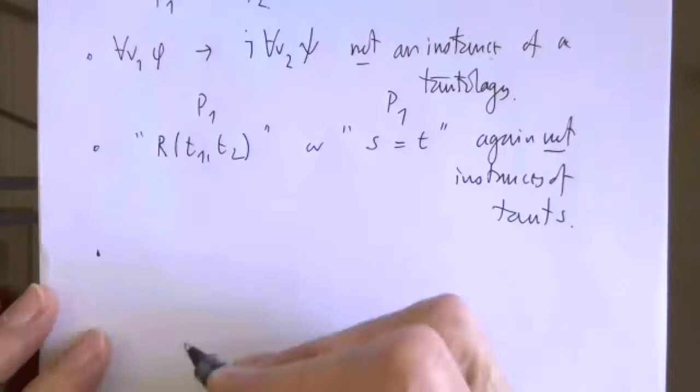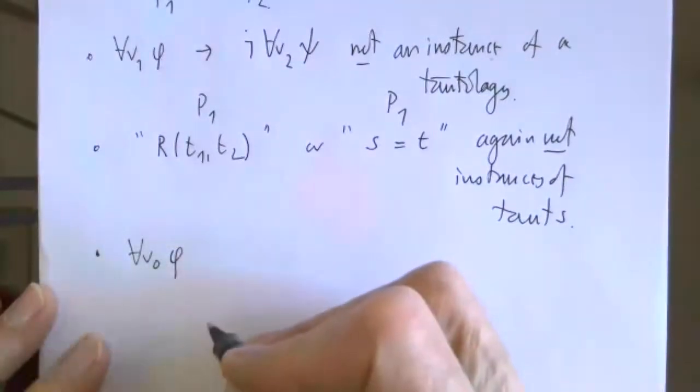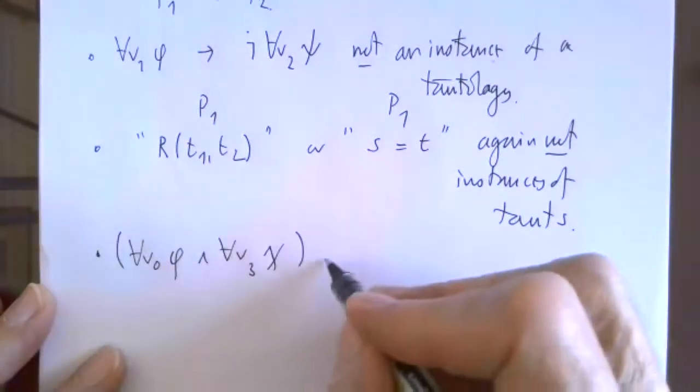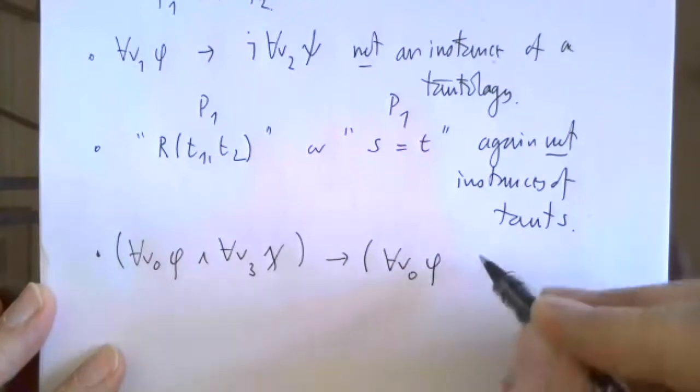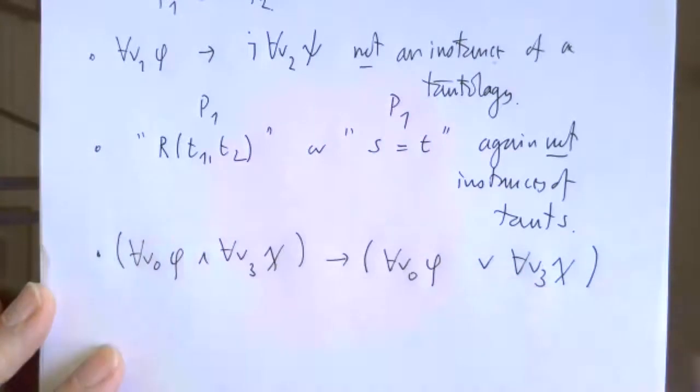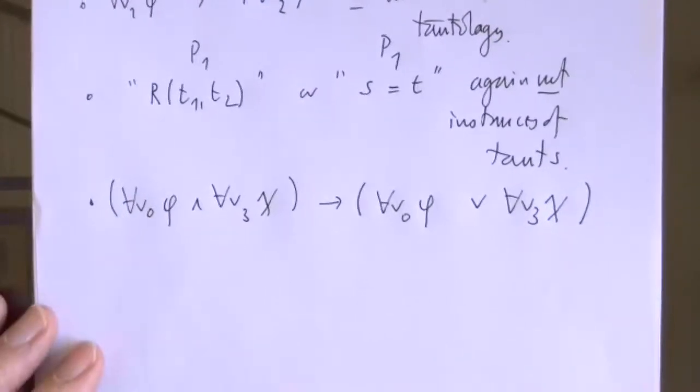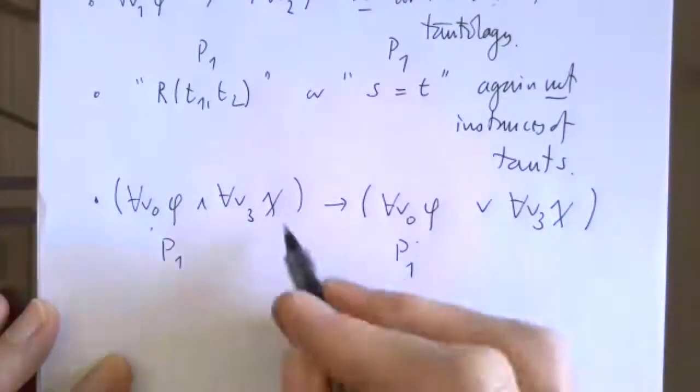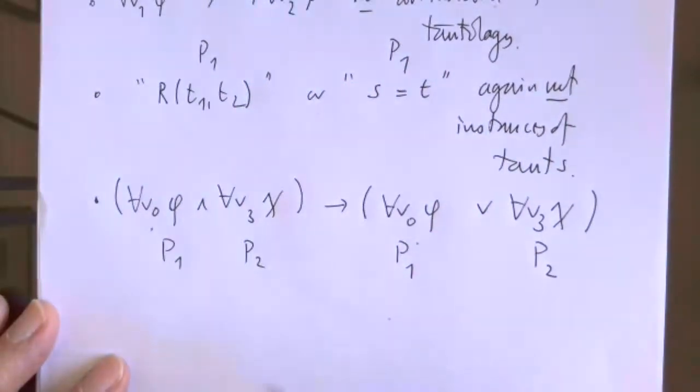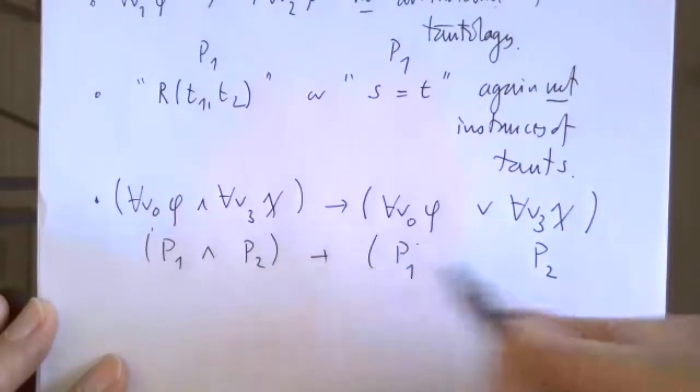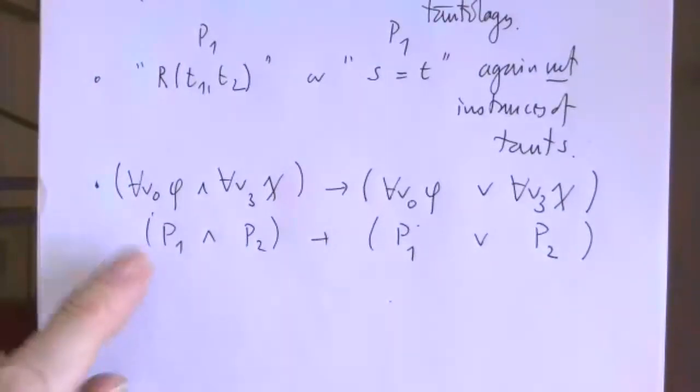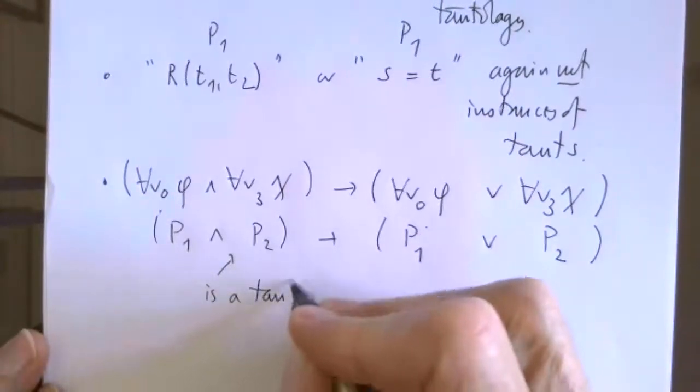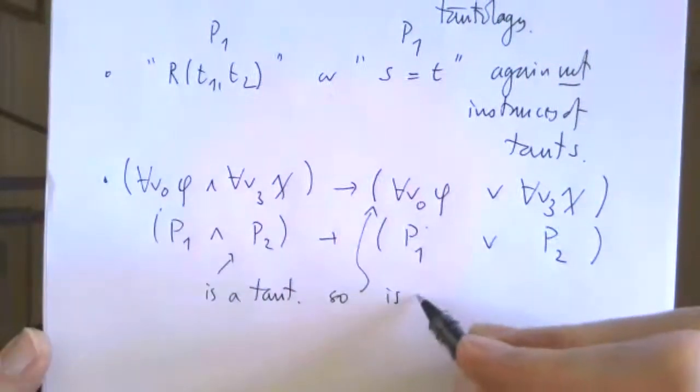On the other hand, you might have something like for all v0 phi and for all v3 chi arrow for all v0 phi. This as it turns out is an instance of a tautology. I've got the same formula, p and p here, and instances of p2. The shape of this looks like a tautology, which you can check by truth tables, so this is universally valid.